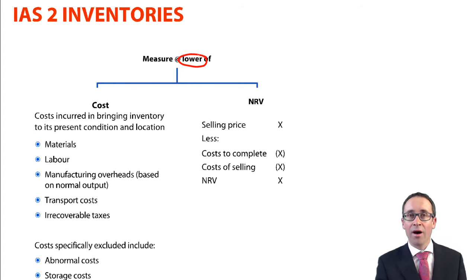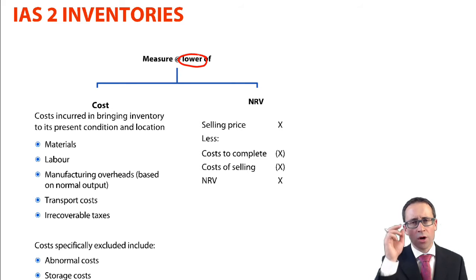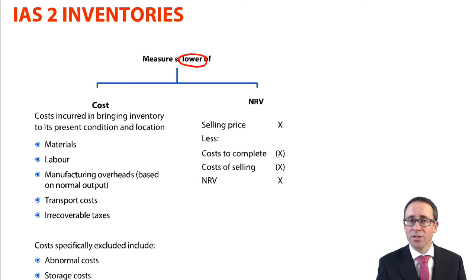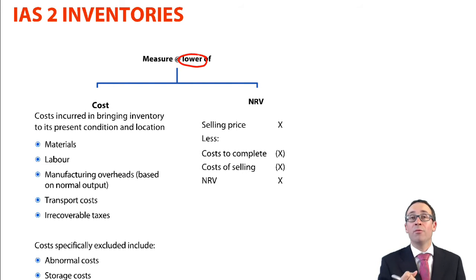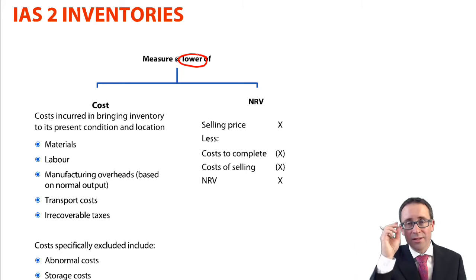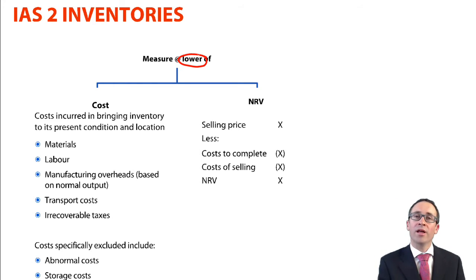When looking at your NRV, that's your expected selling price, less your cost to complete, less your cost of selling. We can look at that on a per unit basis — what we expect to sell it for, less any cost to complete. For example, if packaging is damaged and we need to repackage the goods, that would be a cost to complete. Cost of selling includes advertising costs and similar items.